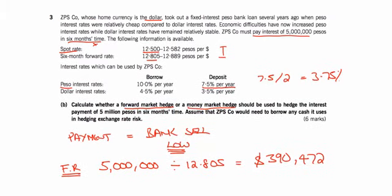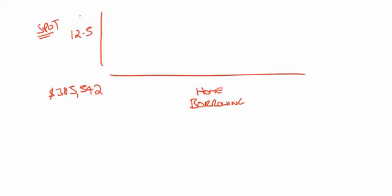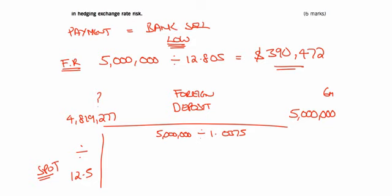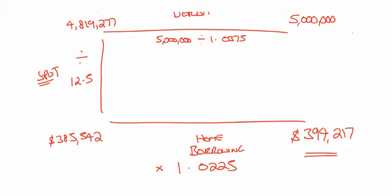Dollar interest rates: borrow at 4.5% per year, which is 2.25% every six months. So if I'm going to borrow $385,542, it's going to cost me — multiply by 1.0225 — and that will eventually cost me $394,217 to make this payment using the money market hedge. Comparing: $394,217 versus $390,472 — the forward rate is cheaper. The difference between those two is $3,745 cheaper. So I would go for the forward rate.